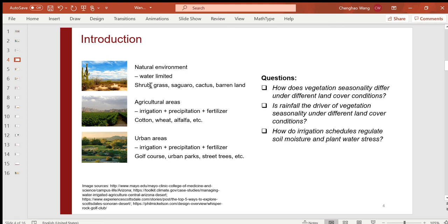Common crops in agricultural land include cotton, wheat, and alfalfa. These crops are highly dependent on water input from irrigation and precipitation, as well as fertilizer. This is also the case for urban areas. Common urban vegetation includes grass and trees in golf courts, urban parks, and along the street.